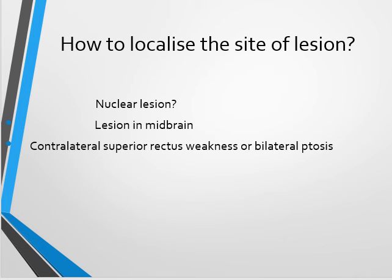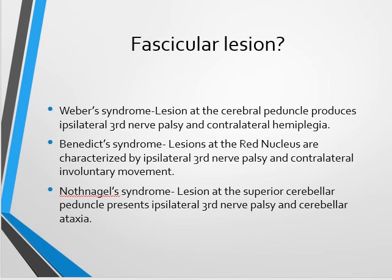To localize the site of lesion: a nuclear lesion in the midbrain causes contralateral superior rectus weakness or sometimes bilateral ptosis due to bilateral innervation from a single nucleus. Fascicular lesions are important from an exam perspective. Weber syndrome involves a lesion at the cerebral peduncle, causing ipsilateral third nerve palsy and contralateral hemiplegia.